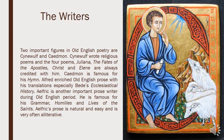Two important figures in Old English poetry are Cynewulf and Caedmon. Cynewulf wrote religious poems, and the four poems Juliana, The Fate of the Apostles, Christ, and Elene are always credited to him. Caedmon is famous for his Hymn. Alfred enriched Old English prose with his translations, especially Bede's Ecclesiastical History. Ælfric is another important prose writer of the Old English period, famous for his Grammar, Homilies, and Lives of Saints. Ælfric's prose is natural, easy, and very often alliterative.